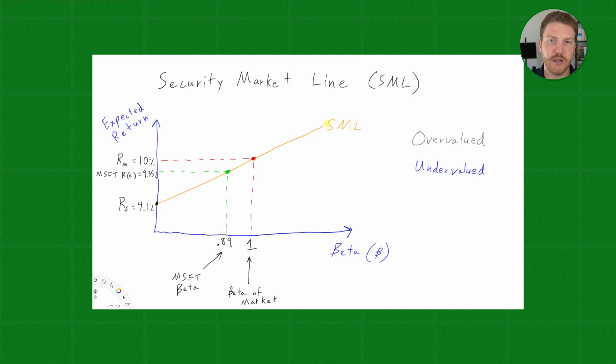Now, I have plotted two points on the security market line. The red dot is the market portfolio or the S&P 500 index, which we talked about earlier, which has a beta of 1. And with a beta of 1, the market portfolio has an expected return of 10%, which we talked about earlier as well.